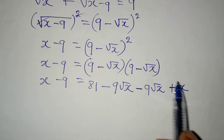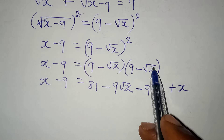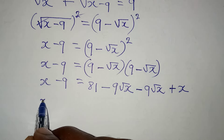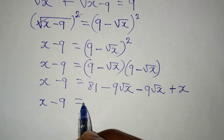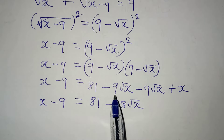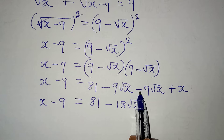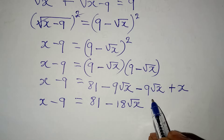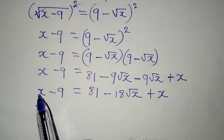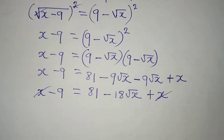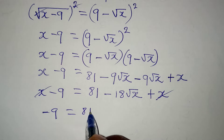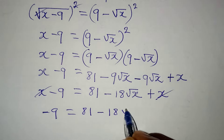Negative times negative gives positive, and root x times root x equals x. Combining like terms: x minus 9 equals 81 minus 18 root x plus x. The x terms cancel from both sides, leaving minus 9 equal to 81 minus 18 root x.